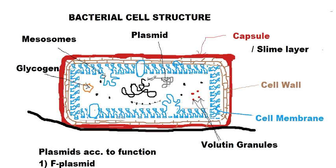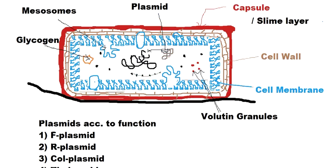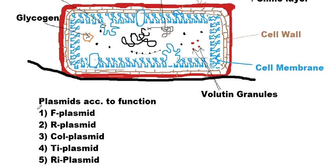There are many types of plasmids. According to function, we can classify them as: the F plasmid, the R plasmid, the Col plasmid, the Ti plasmid, and the Ri plasmid.